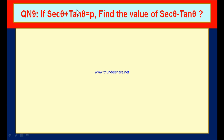Wherever you find secant theta plus tan theta, you must recollect the trigonometrical identity which has the relation between secant theta and tan theta. Here you can find secant theta plus tan theta and secant theta minus tan theta. What will happen if you multiply these two? Secant theta plus tan theta into secant theta minus tan theta — this is a plus b and this is a minus b. If you multiply a plus b with a minus b, you will get a square minus b square, that is, secant square theta minus tan square theta.